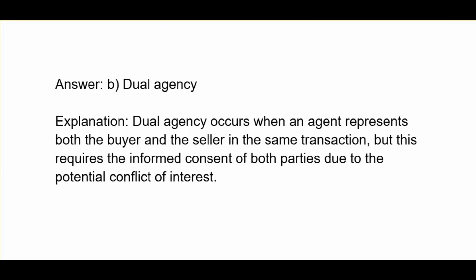B. Dual agency occurs when an agent represents both the buyer and the seller in the same transaction, but this requires the informed consent of both parties due to the potential conflict of interest.